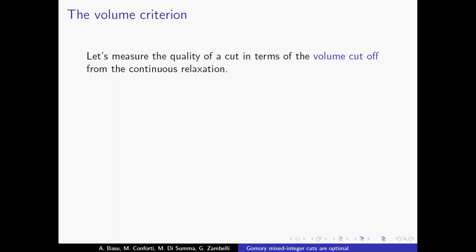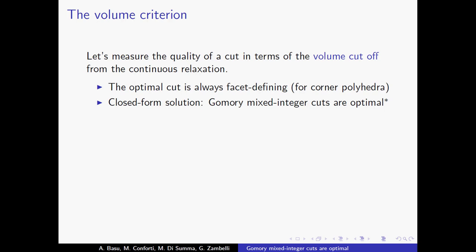The three issues I highlighted before have a positive answer in this case. First, in the context of the corner polyhedron that I will introduce shortly, the optimal cut is always a facet-defining inequality according to this criterion. Second, there is a closed-form solution, and this is the Gomory mixed integer cut. There is an asterisk here which I will explain in a moment. And finally, it is very well known that Gomory mixed integer cuts are very effective in practice.